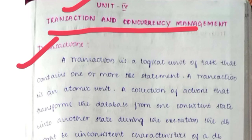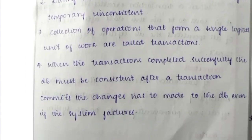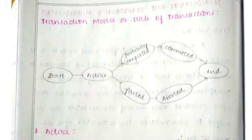What is meant by a transaction? A transaction is an atomic unit — a collection of actions that transforms data in a database. This is the basic concept of a transaction.